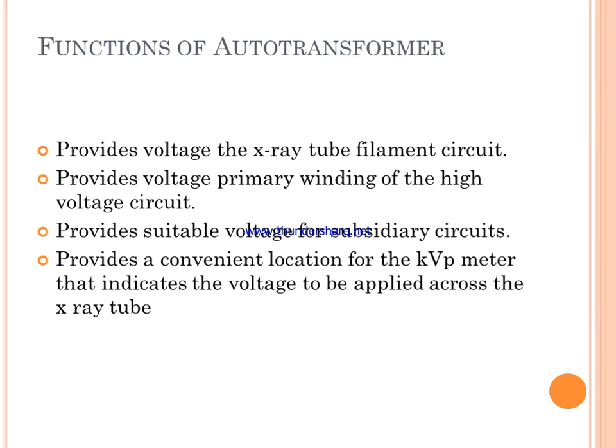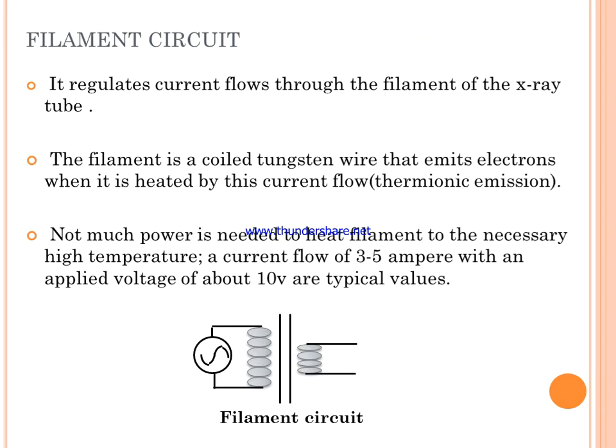The functions of the auto transformer include: providing voltage to the X-ray tube filament circuit, providing voltage to the primary winding of the high voltage circuit, providing suitable voltage for subsidiary circuits, and providing a convenient location for the kVp meter.